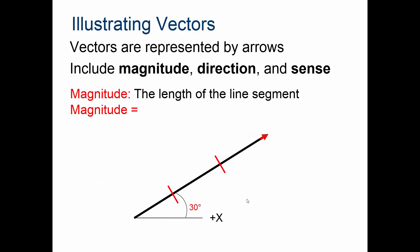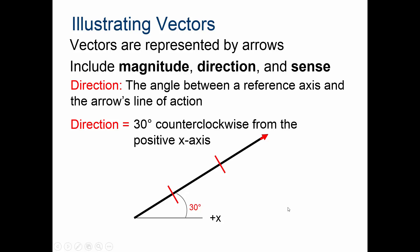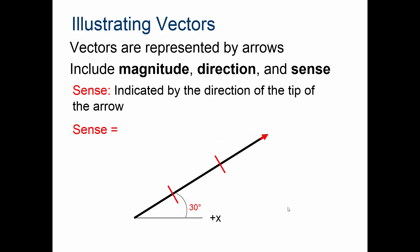When we illustrate vectors, they are represented by arrows and include magnitude, direction, and sense. The magnitude is the force, or the strength of it, and is represented by the length of the line — the longer the line means a greater magnitude. So if they show three line segments, the magnitude is three. The direction is the angle between the reference axis and the arrow's line of action. Here, if the reference line is the horizon, we're 30 degrees above it — 30 degrees counterclockwise from the positive x-axis. The sense is just the overall direction of the tip of the arrow, so this one's going up and to the right.